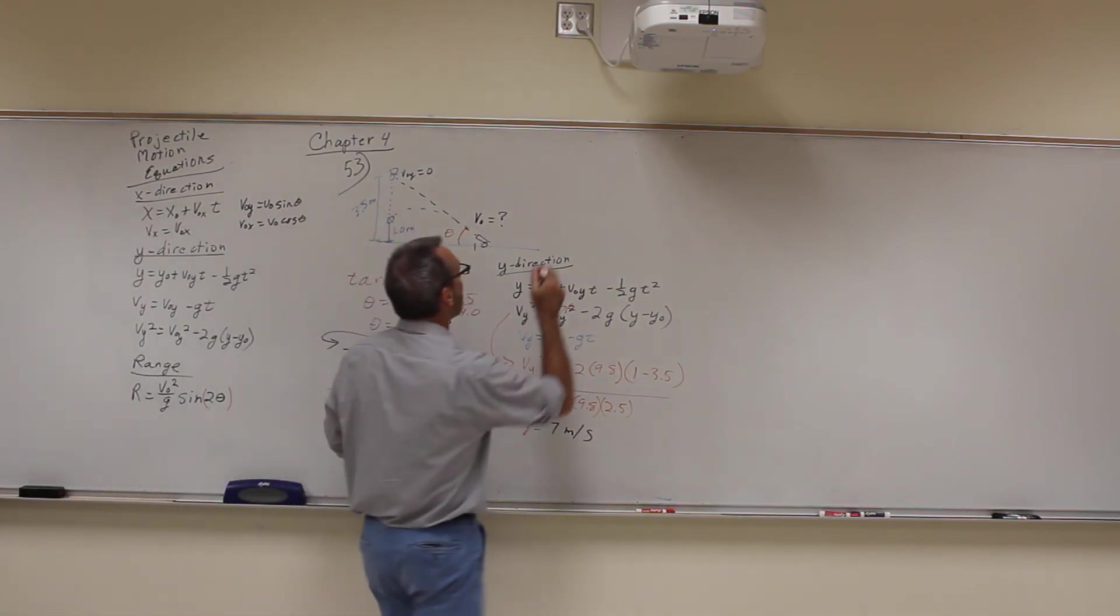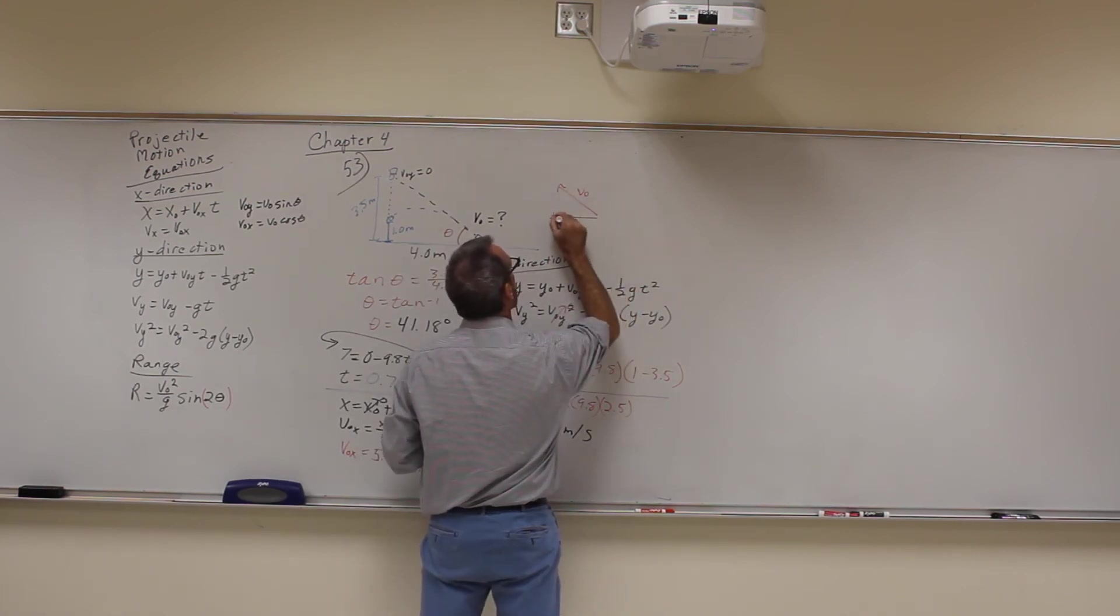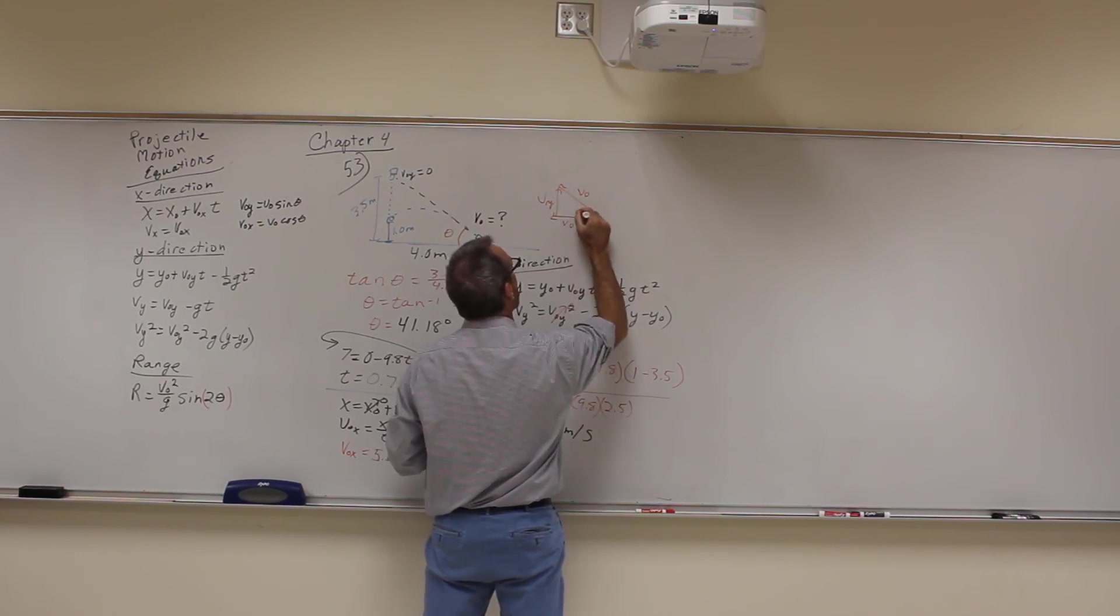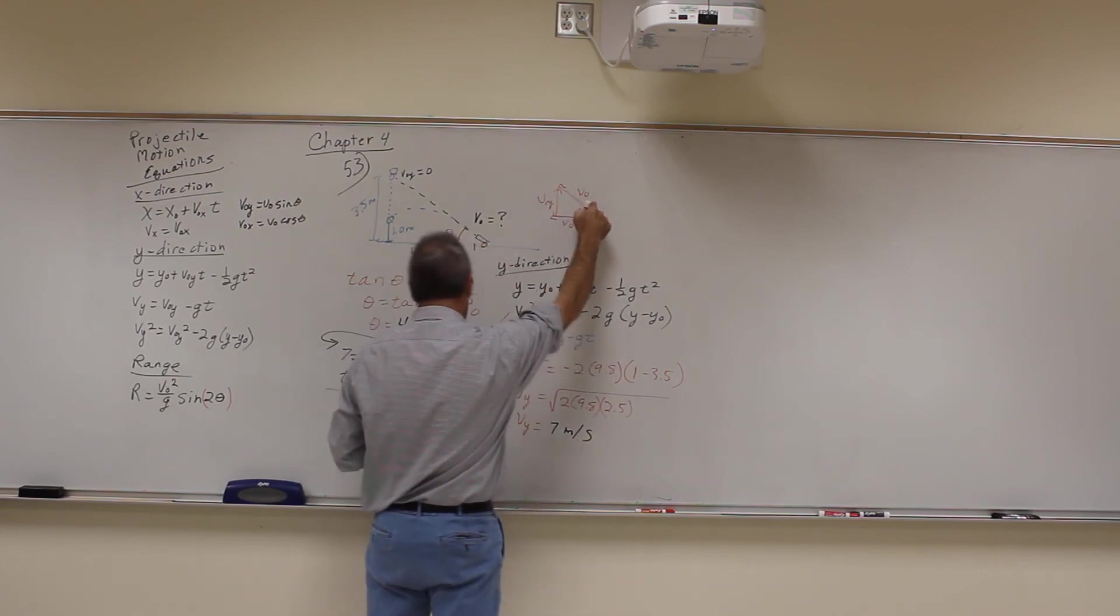Okay, so remember here's our initial thing. We got V0. This is V0 X, this is V0 Y over here. We know the angle, and I know V0 X. I want to find out what V0 is.